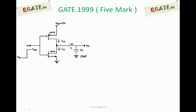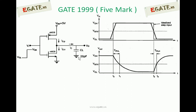The current flowing through PMOS is IDP, and the current flowing through NMOS is IDN. The current flowing into the capacitor IC equals IDP minus IDN. When we apply a step input voltage, two input waveforms are shown: one ideal and one practical. An ideal step input has zero rise time and zero fall time, whereas in practice every signal has some finite rise and fall time. For simplicity, we will always consider the ideal input only.